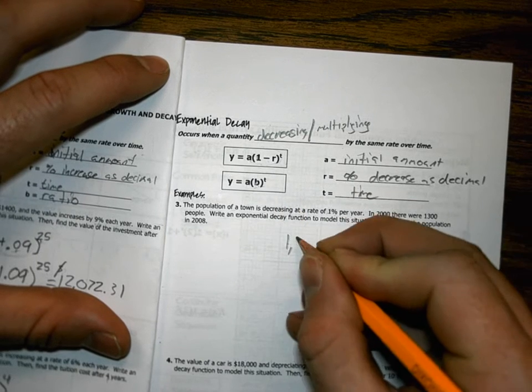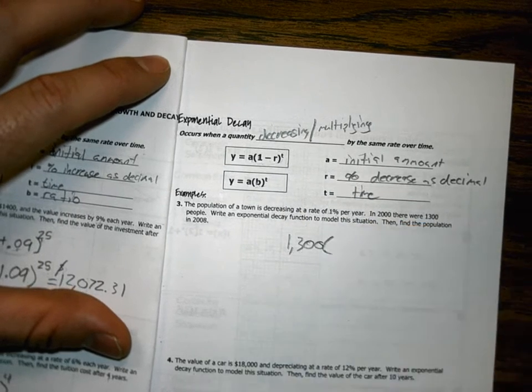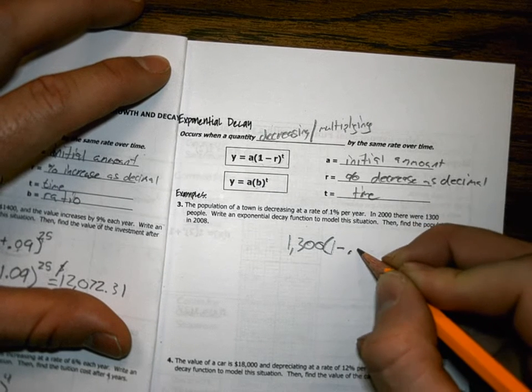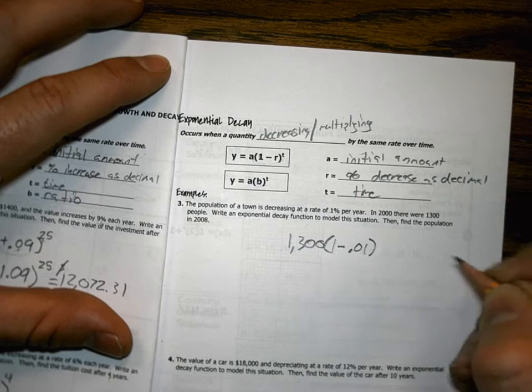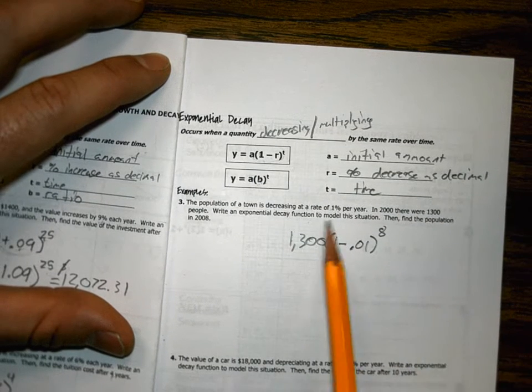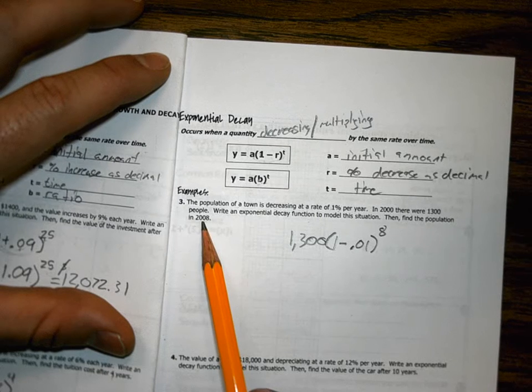This is 1,300. My percent is 1 minus 0.01 to the 8th power. I got 8 years because between 2000 and 2008 is 8 years.